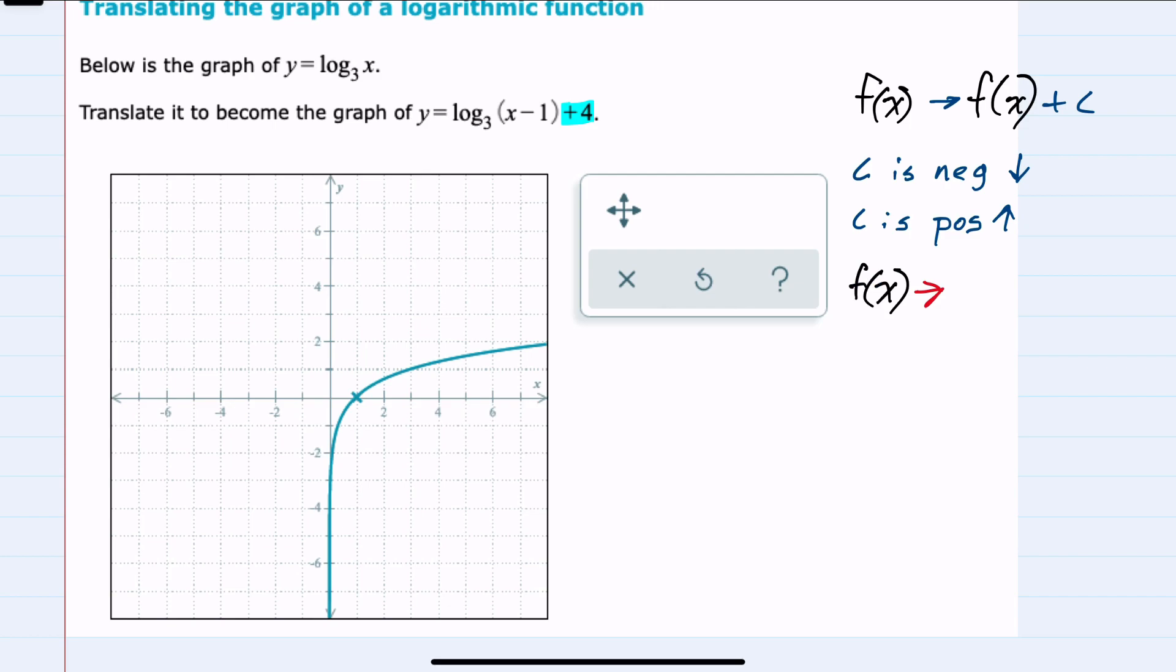But then we also have the situation where f(x) is being translated by having, instead of f(x), f of (x plus or minus some constant). This time, whenever c is negative, it may be counterintuitive, but it shifts that many units to the right. And when c is positive, it shifts that many units to the left. And that is our situation here with the x minus 1 inside the logarithm.